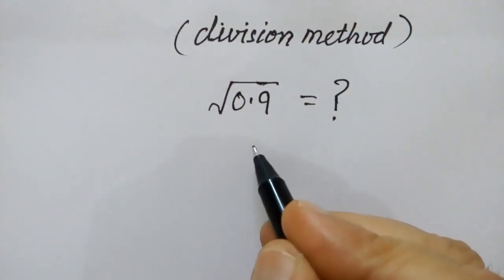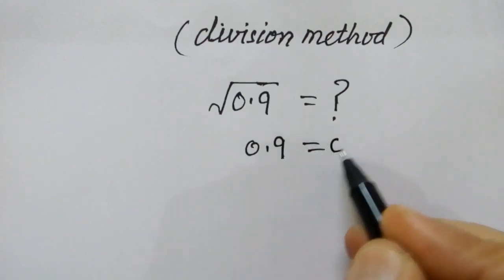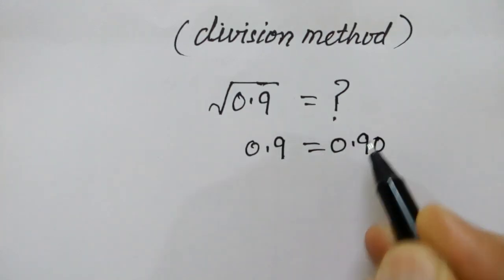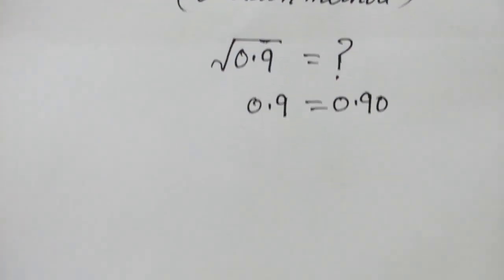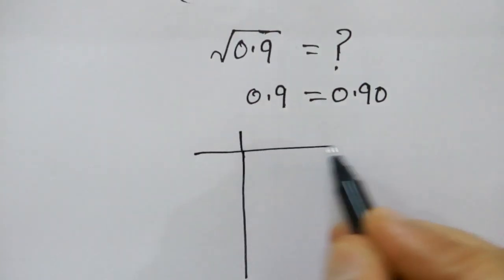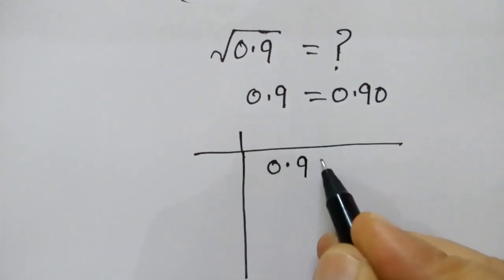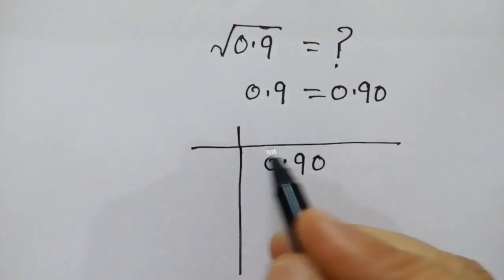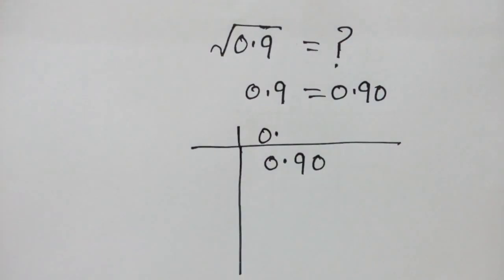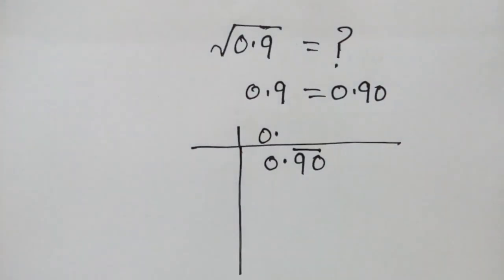First, we will write 0.9 as 0.90. Now we set up the division: 0 point 90. We will make pairs of digits.